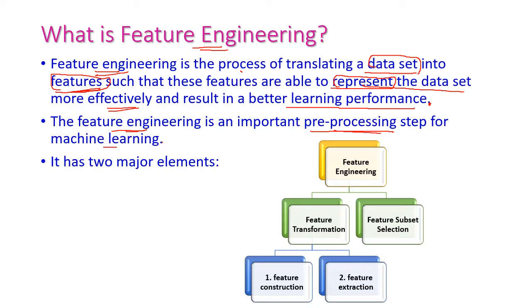There are two major elements in feature engineering. The first element is feature transformation, and the second element is feature subset selection. Within feature transformation, there are two important things: feature construction and feature extraction.